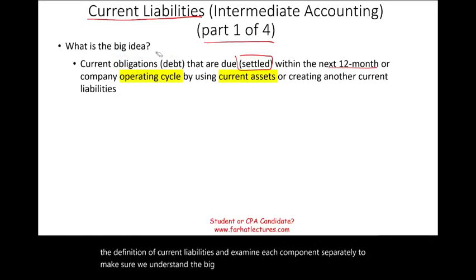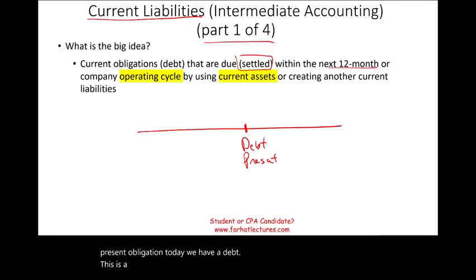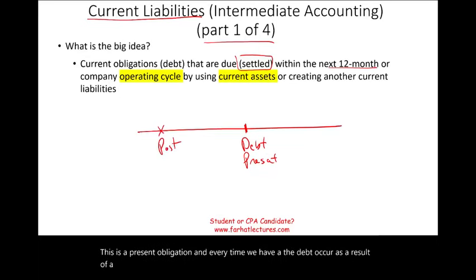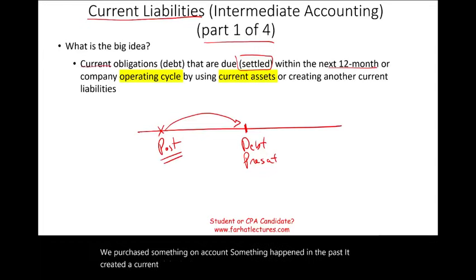An obligation is a present obligation. Today, we have a debt — this is a present obligation. Every time we have a debt, it occurs as a result of a past transaction. Something happened in the past: we borrowed money, we purchased something on account. Something happened in the past and it created a current obligation.